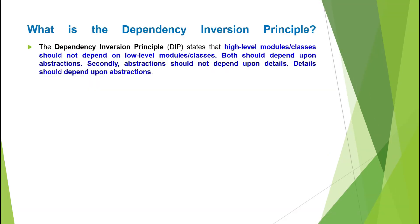Let us first understand the basic definition of Dependency Inversion Principle. The Dependency Inversion Principle states that high-level models or classes should not depend on low-level models or classes — both should depend upon abstractions. Secondly, abstractions should not depend on details; details should depend upon abstractions.